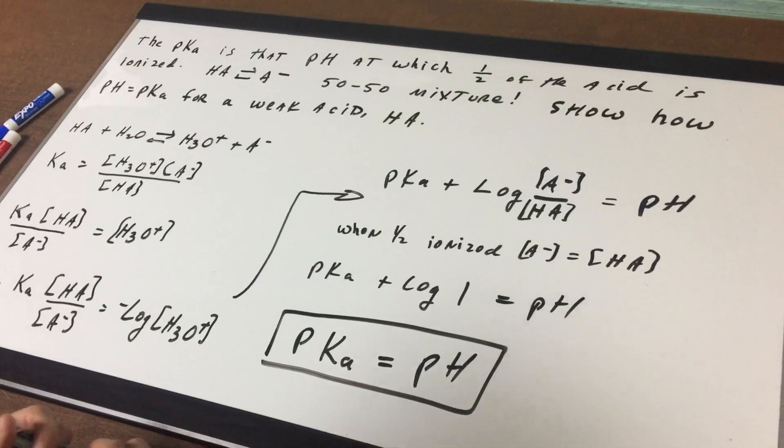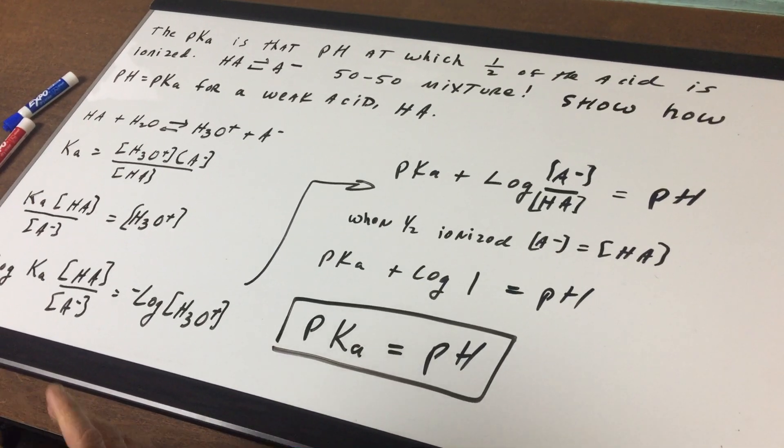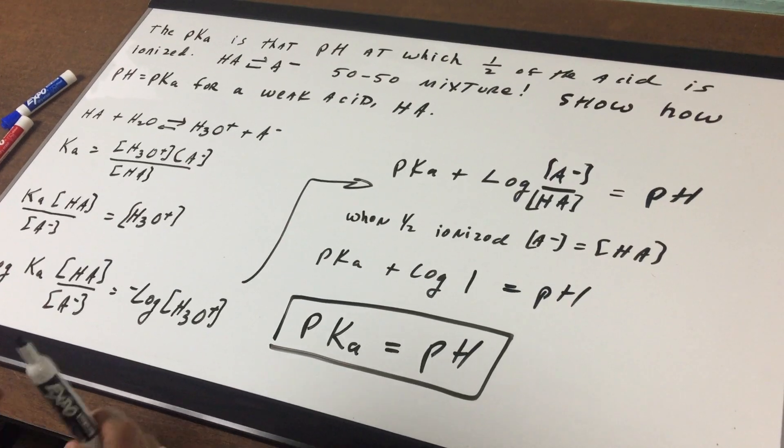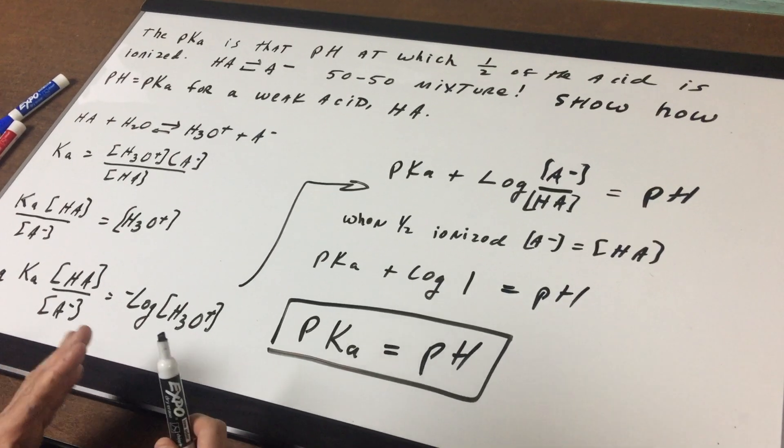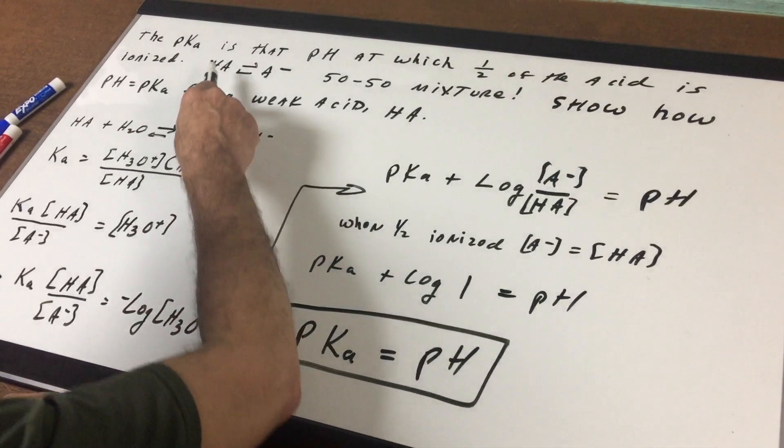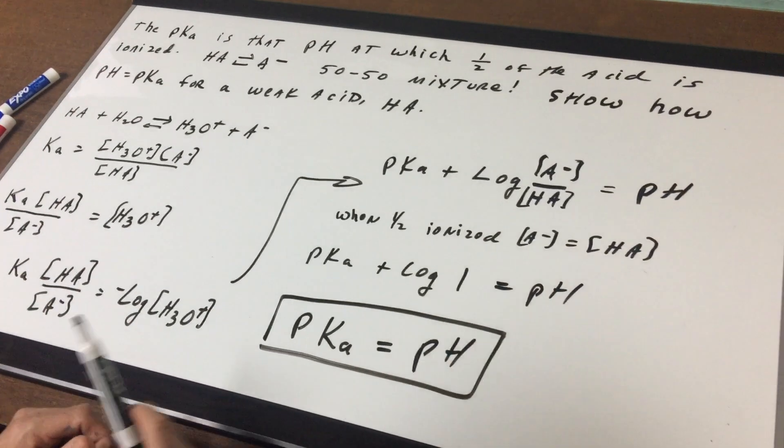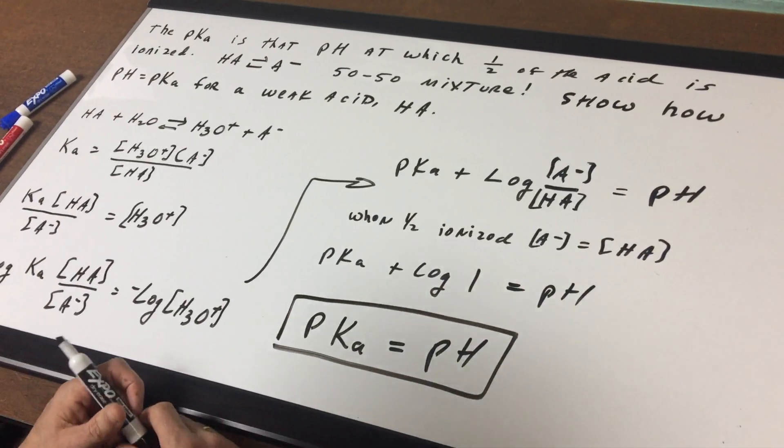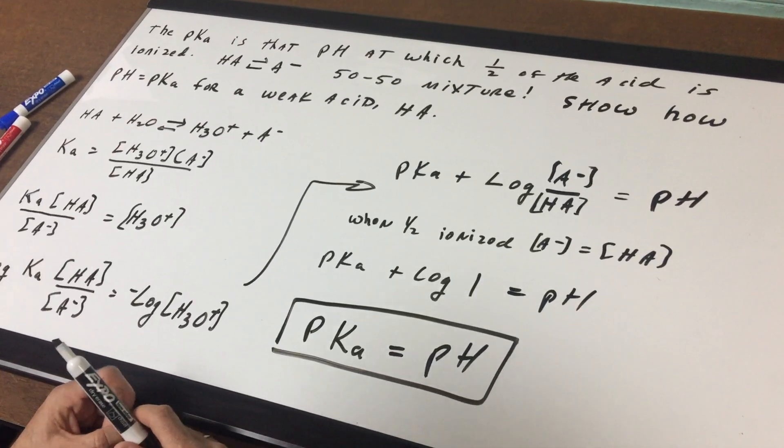that gives you a mixture that's called a buffer. I must drill this into my study group's head. In the real class, we really get into this, and I emphasize all the time that the best buffer is when you're at the pKa of an acid, because you get half the protonated form and half of the unprotonated form. I want you to show me how the pH is equal to the pKa for a weak acid, HA.